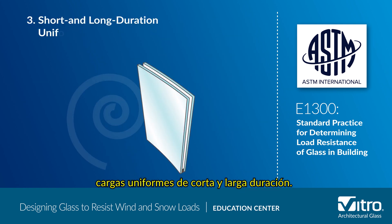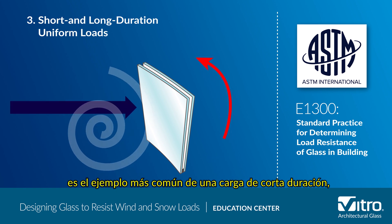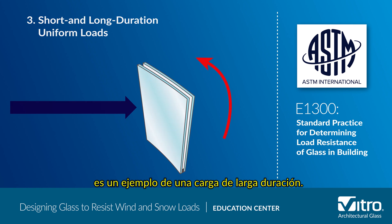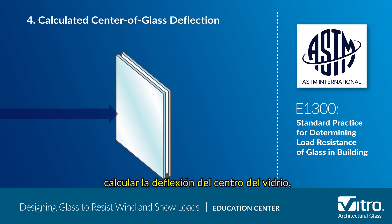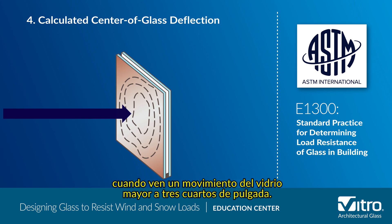Three: short and long duration uniform loads. A wind gust against a building facade is the most common example of a short duration load, while snow on top of a skylight is an example of a long duration load. Four: calculating center of glass deflection, as excessive glass deflection can result in edge pullout or may cause concern to the building's occupants when they see glass movement greater than three-quarters of an inch.